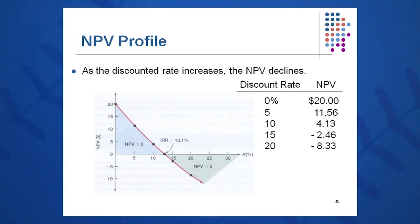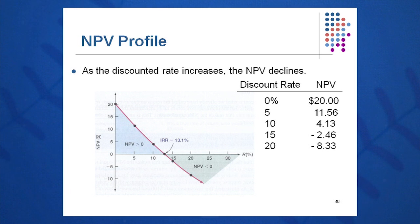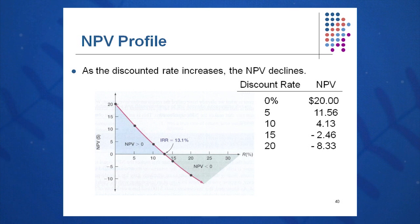We plug in zero percent — that's not the IRR because NPV comes out at 20. At 5%, NPV equals 11, so 5% is not the IRR. At 10%, NPV equals 4.13 million, so 10% is not it either. We keep going — 15%, 20% — and create this NPV profile. We see that the IRR comes in at about 13.1% on this project. Since those are our best-guess estimates, this project would not jump over the CFO's hurdle rate of 15% and would get rejected.